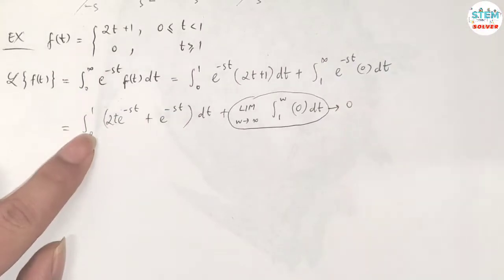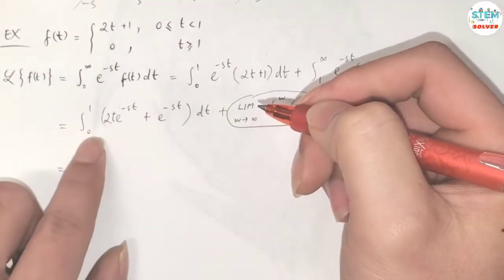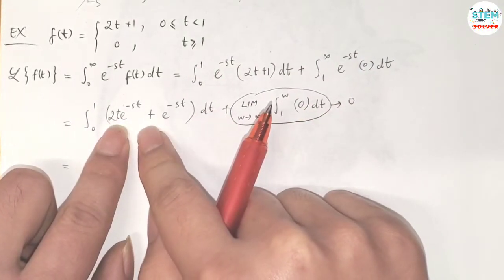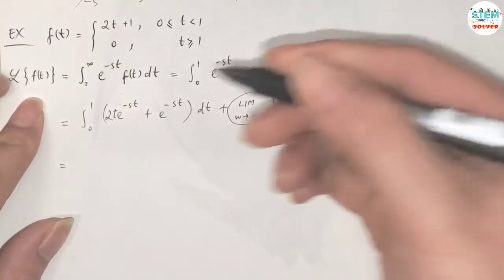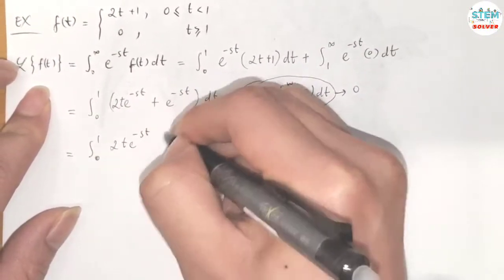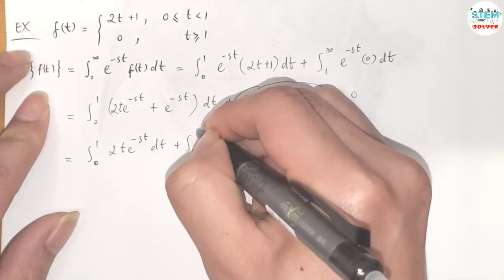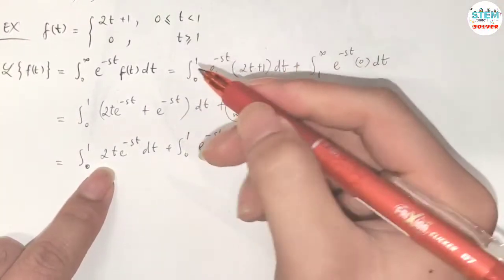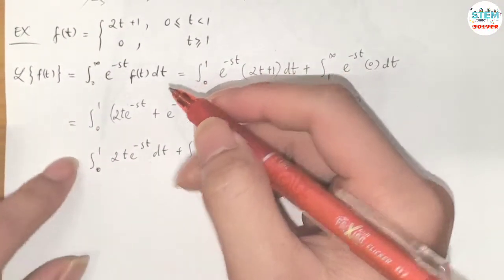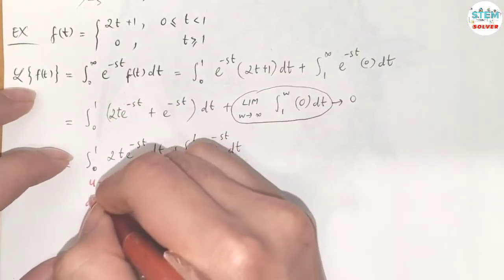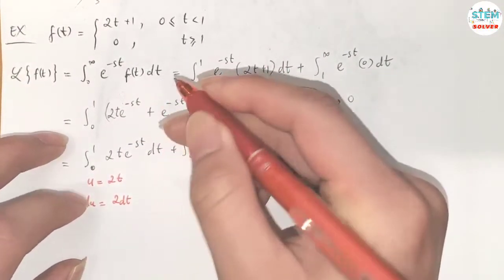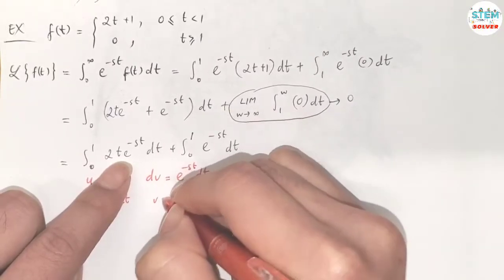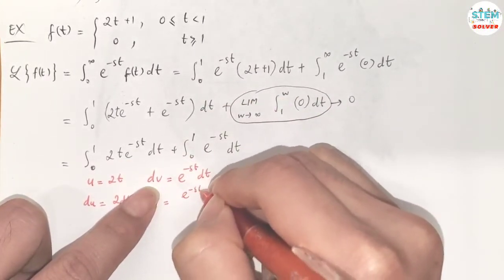So for the first integral, we have the integral from 0 to 1 of 2t e to the negative st dt, plus the integral from 0 to 1 of e to the negative st dt. For the first part, I'm going to integrate by parts. Let u equal to t, so du equals dt. For dv, let it equal to e to the negative st dt, so v equals e to the negative st over negative s.